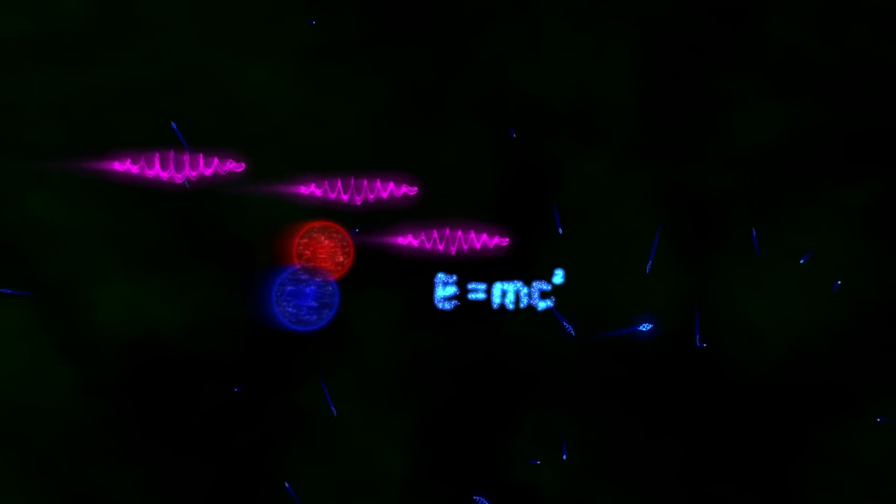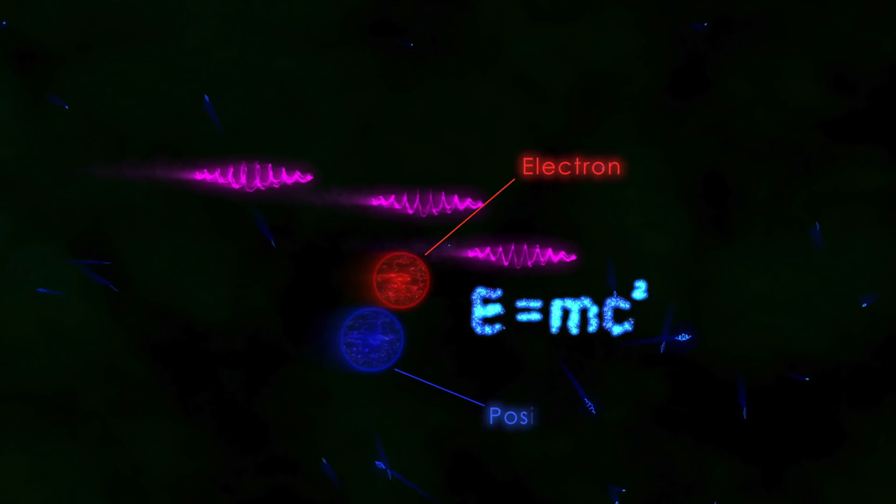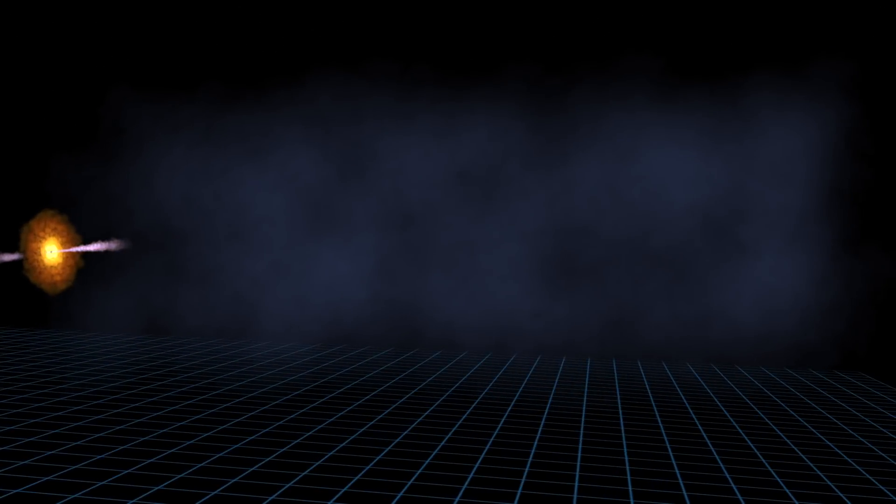When a gamma ray collides with starlight, it transforms into two particles, an electron and a positron, in accordance with Einstein's famous equation. These collisions weaken a blazar's gamma ray signal like fog dulling a car's headlights.